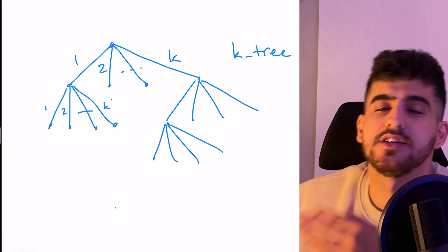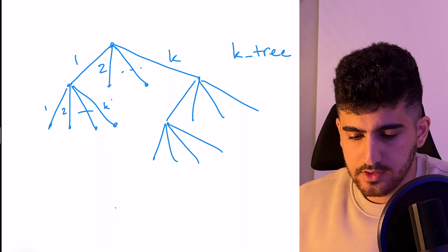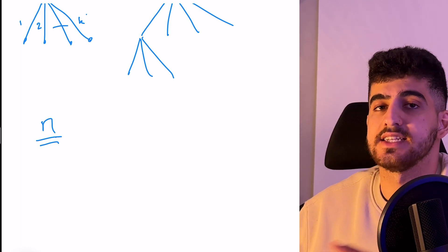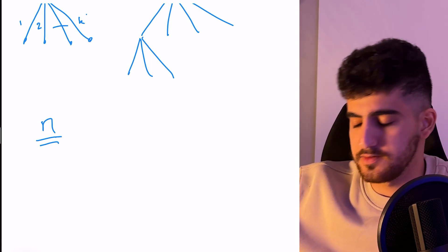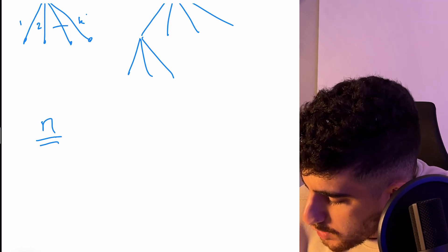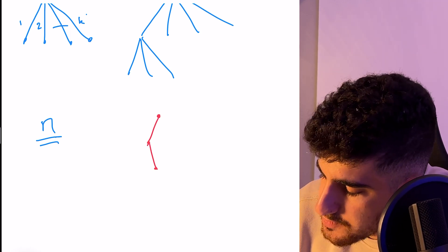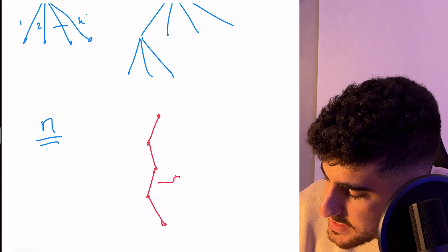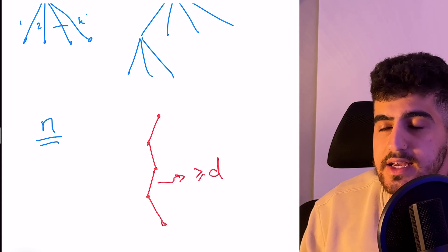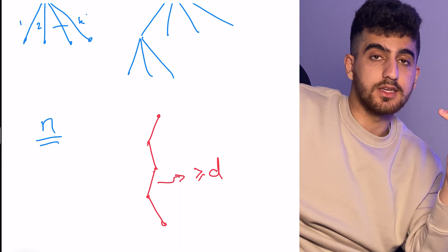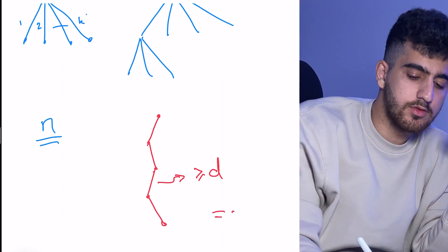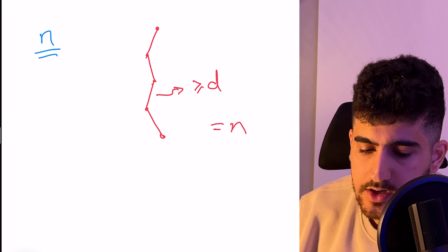This problem wants you to find how many paths with total weight exactly N we have, such that the path starts from the root and has at least one edge which weighs at least D. So we want to calculate the number of paths starting from the root where at least one of the edges has weight greater than or equal to D. The other ones can be anything, but at least one should have weight at least D, and the total weight must equal N.